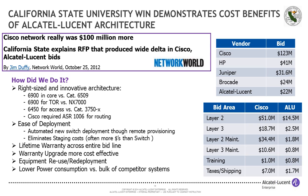Another anecdotal story: we're hearing from CSU that as a result of their collapsed architecture, they're now using a lot less power than before — an additional cost savings they didn't anticipate. It's worth noting that CSU was a Cisco shop before turning to Alcatel-Lucent Enterprise solutions.